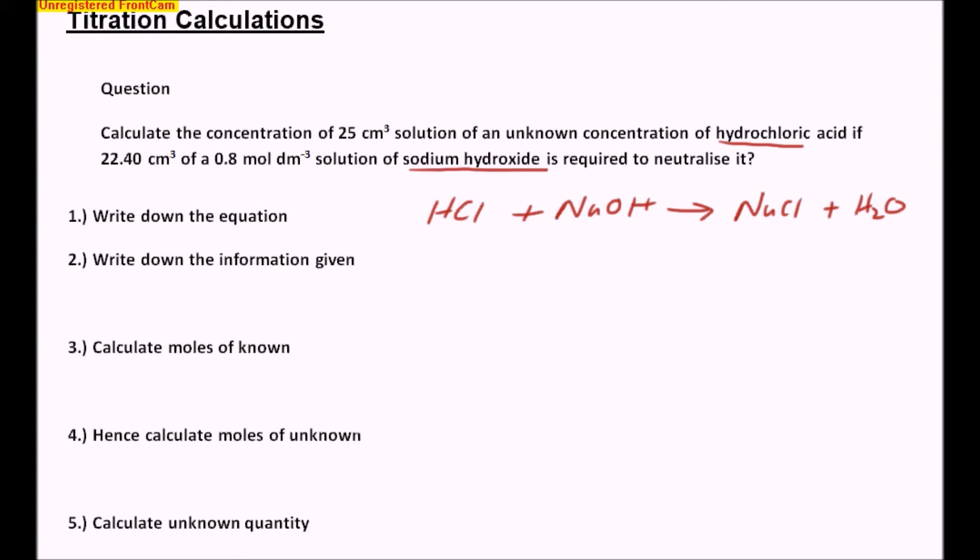The second thing I'm going to look at now is the information given to me, and the information I'm always interested in is the concentration of known reactants and also the volume. So the HCl, I need to work this out, it's an unknown, and it's clearly written here in the question, it's an unknown concentration,